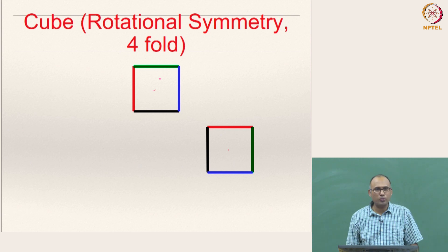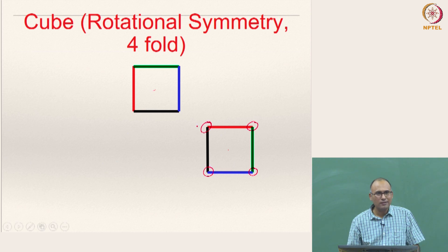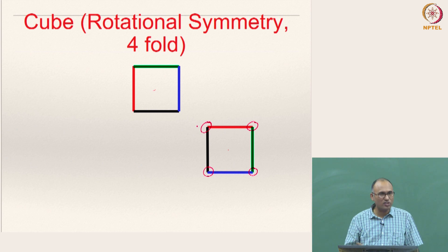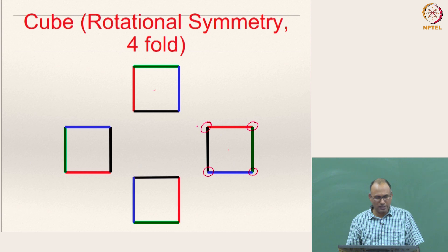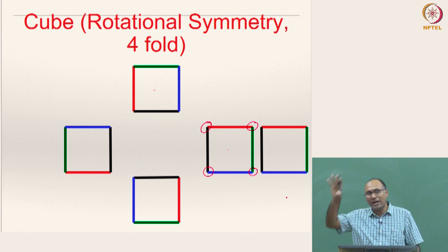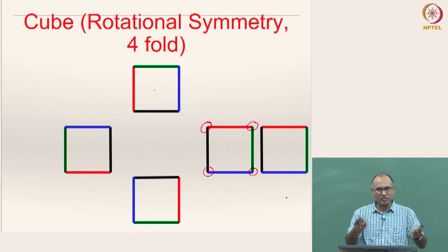Then what happened to the lattice points? Did the lattice points change their position? This was your lattice with four lattice points: 1, 2, 3, 4. When I rotated this by 90 degrees, the lattice point positions have not changed. You can rotate it another 90 degrees, and another 90 degrees — you can rotate it by 90 degrees and still maintain the same lattice points. Whether you take the original square or the rotated square, it generates the same set of lattice points.